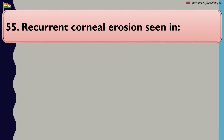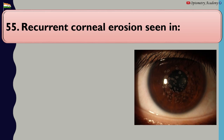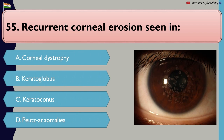Recurrent corneal erosion is seen in: A. Corneal dystrophy, B. Keratoglobus, C. Keratoconus, D. Peters anomaly.